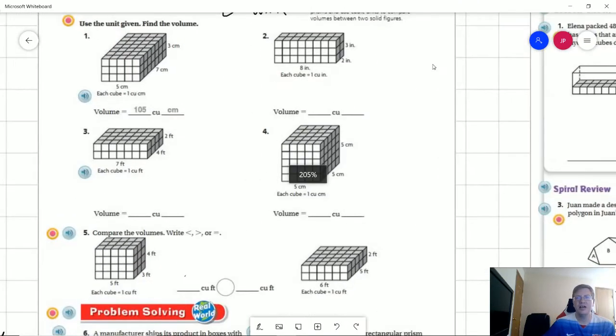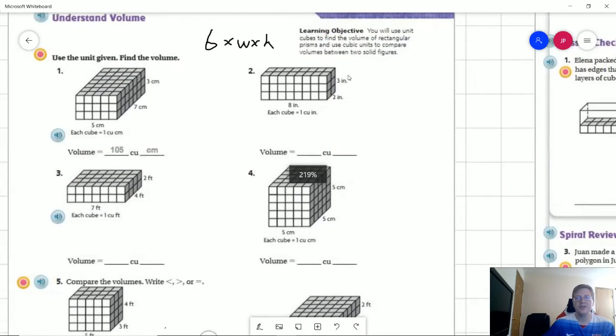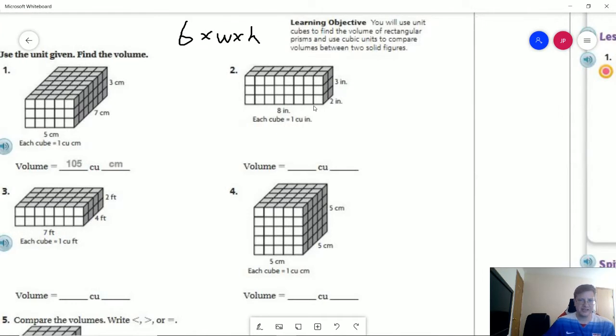So to start with, for number two, we can go ahead and multiply these two sides to get 16. 16 times 3 is going to give us 48, and we are working with cubic inches. For number three, we are doing 7 times 4, which is 28 times 2, which gives us 56, and that would be cubic feet.